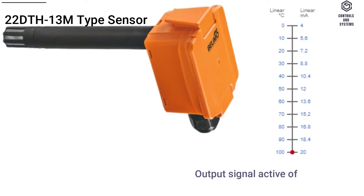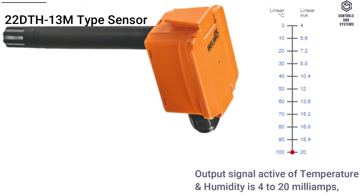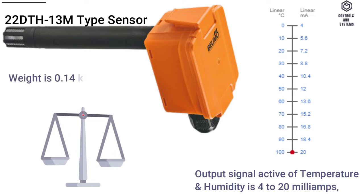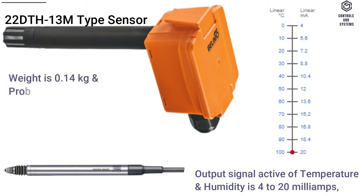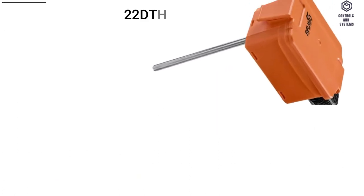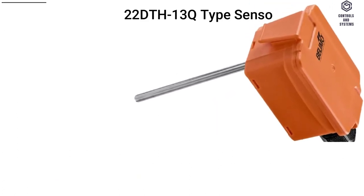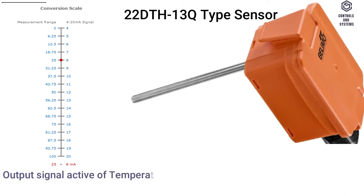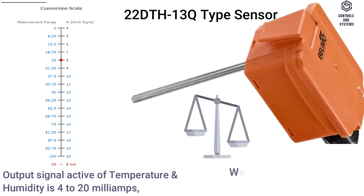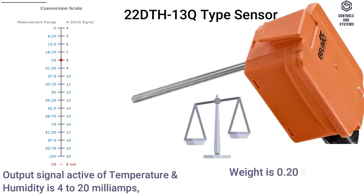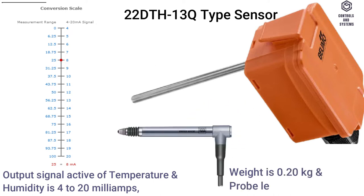22 DTH 13 M type sensor: output signal active of temperature and humidity is 4 to 20 milliamps, weight is 0.14 kilograms, and probe length is 140 millimeters. 22 DTH 13 Q type sensor: output signal active of temperature and humidity is 4 to 20 milliamps, weight is 0.20 kilograms, and probe length is 270 millimeters.